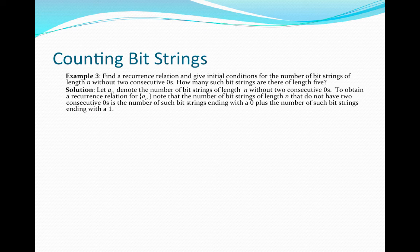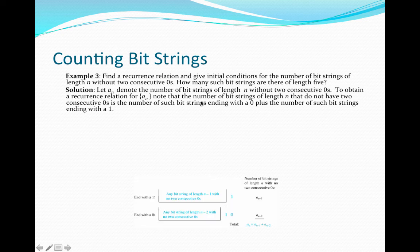To obtain this recurrence relation, we're going to split our type of bit strings into two different kinds. The number of bit strings of length n that do not have two consecutive zeros is the same as the number of such bit strings ending with a zero plus the number ending with a one. Let's look at the following image to develop this approach.